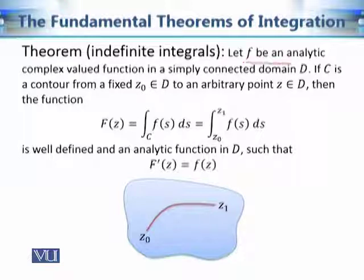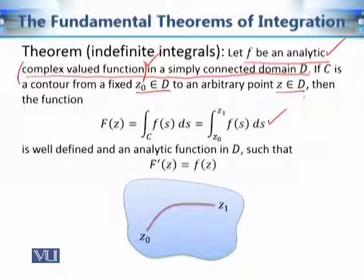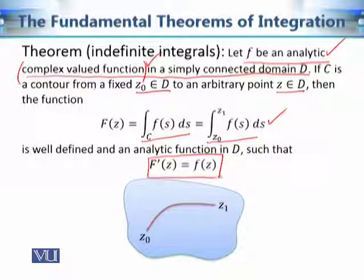If f is an analytic complex-valued function in a simply connected domain D, and we have a contour from a fixed point z₀ to an arbitrary point z, then the contour integral is well-defined and there exists an analytic function F in D such that F'(z) = f(z). These are strong conditions on this complex-valued function.